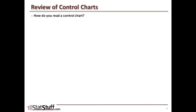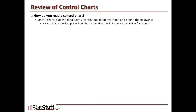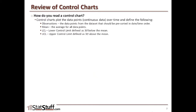How do you read control charts? Control charts plot the data points, usually using a continuous type of data, over time. They define a few things for us: first, the observations — the data points from the data set that should be in a pre-sorted order, like a date-time order. They also plot the mean, the average for all the data points, the lower control limit which represents three standard deviations below that mean, and the upper control limit which is three standard deviations above the mean. They would also include any special cause tests — any of eight different rules that can be predefined to help identify any potential special causes in the data.